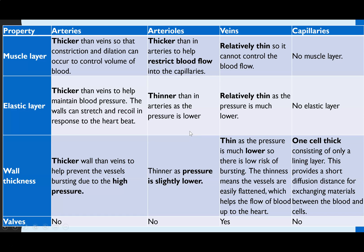Comparing all four vessel types: arterioles connect arteries to capillaries and actually have a much thicker muscular layer compared to arteries, which people often wouldn't expect. This helps restrict blood flow before it enters the capillaries — too much pressure there could damage them. The elastic layer is much thinner in arterioles because pressure has already started to drop by that point, making the overall wall thickness much thinner. No valves in arterioles.